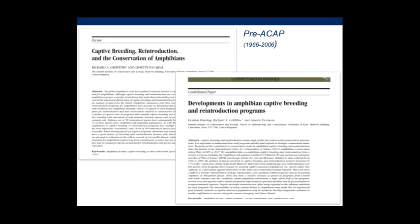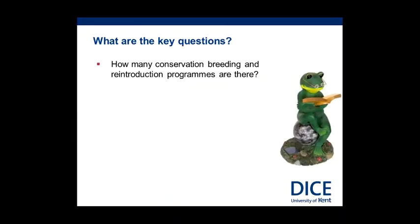When the ACAP came out and a few years on from 2007, we thought it would be useful to review this again and see if there had been any changes post-ACAP. So we repeated the process — mainly Gemma's work — reviewing what had gone on in terms of amphibian captive breeding and reintroduction from 2007 up to 2013. We set out to determine: how many conservation breeding and reintroduction programs are actually going on, and what is the scale of it?